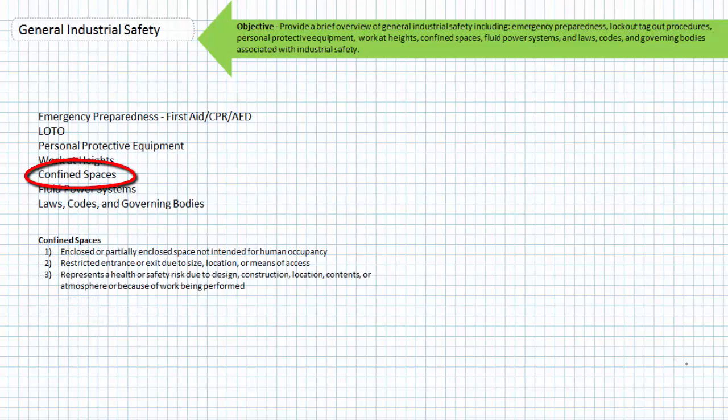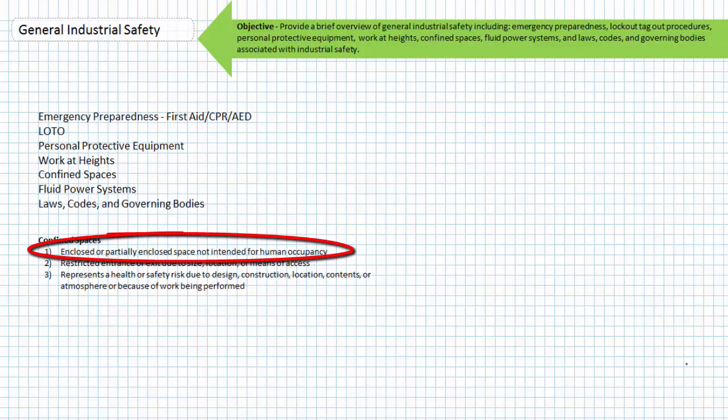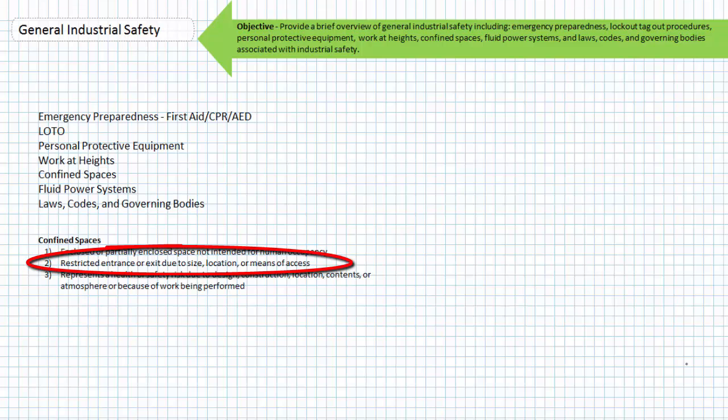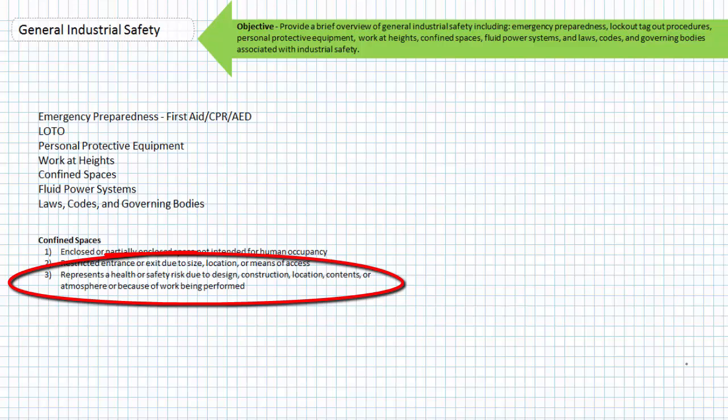Confined spaces. Let's move into a discussion of an enclosed or partially enclosed space not intended for human occupancy. Confined space is recognizable as one that is enclosed or partially enclosed, not intended for human occupancy, has a restricted entrance or exit, and can represent a health or safety risk due to its design, construction, location, contents, or atmosphere.